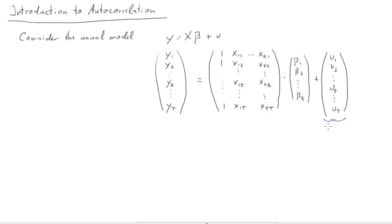And a vector of error terms. Now this vector of error terms, this is a random vector. That's important now, and we'll deal with this vector of u.